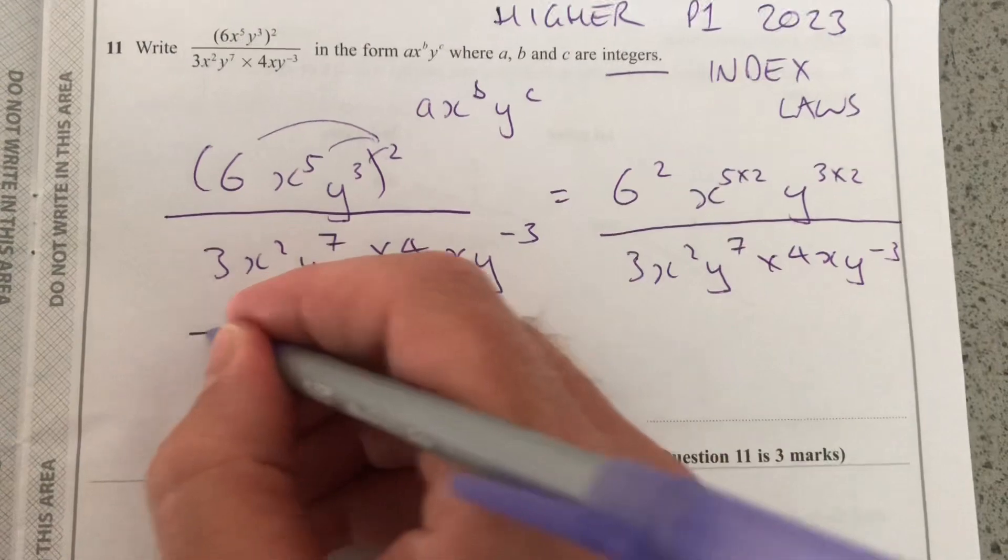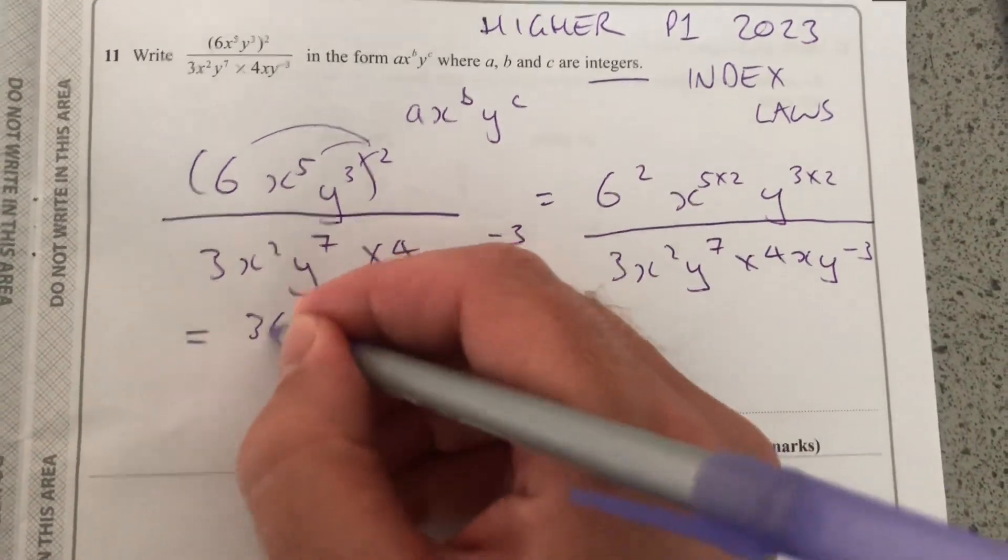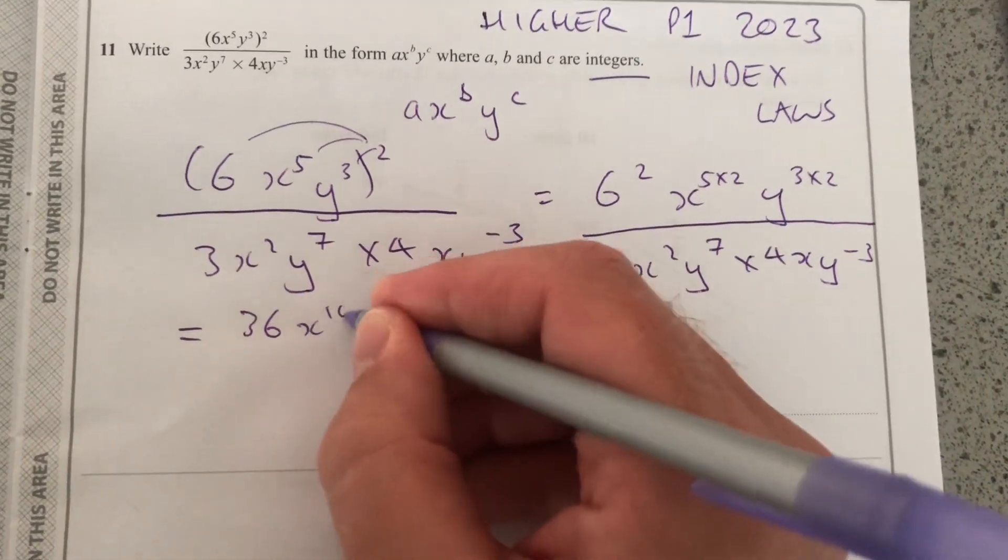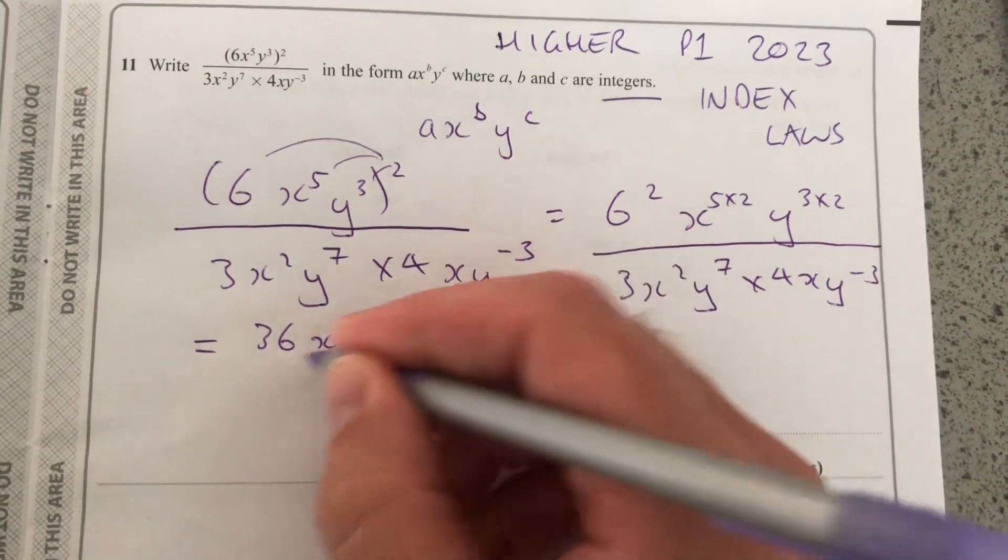So that numerator, let's clear that up first. 6 squared is 36, X to the 10, Y to the 6.